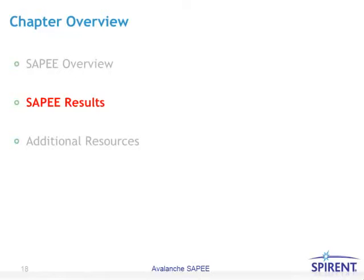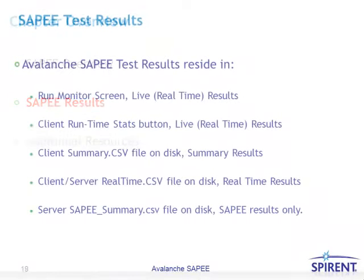Let's take a look at SAPI results. Avalanche SAPI test results reside in the run monitor screen for live, real-time results. Additional result locations include the client runtime stats button for live real-time results, the client summary.csv file on disk, the client and server real-time.csv files on disk, and the server SAPI_summary.csv file on disk.